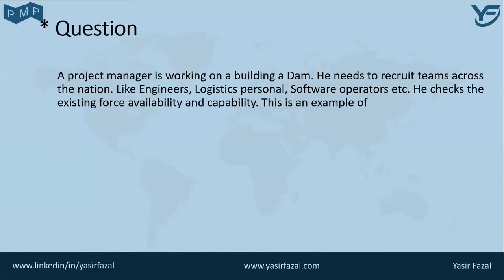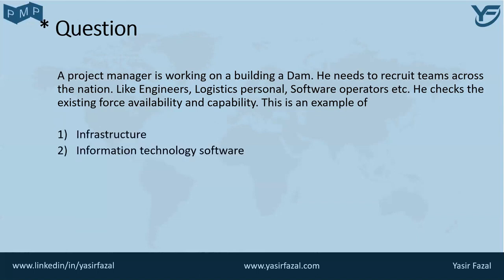It is time for our star question. A project manager is working on building a dam. He needs to recruit a team across the nation — engineers, logistics persons, software operators, etc. He checks the existing workforce availability and capability. This is an example of what: infrastructure, information technology software, resource availability, or employee capability? The answer lies in this video — please answer in the comment section.